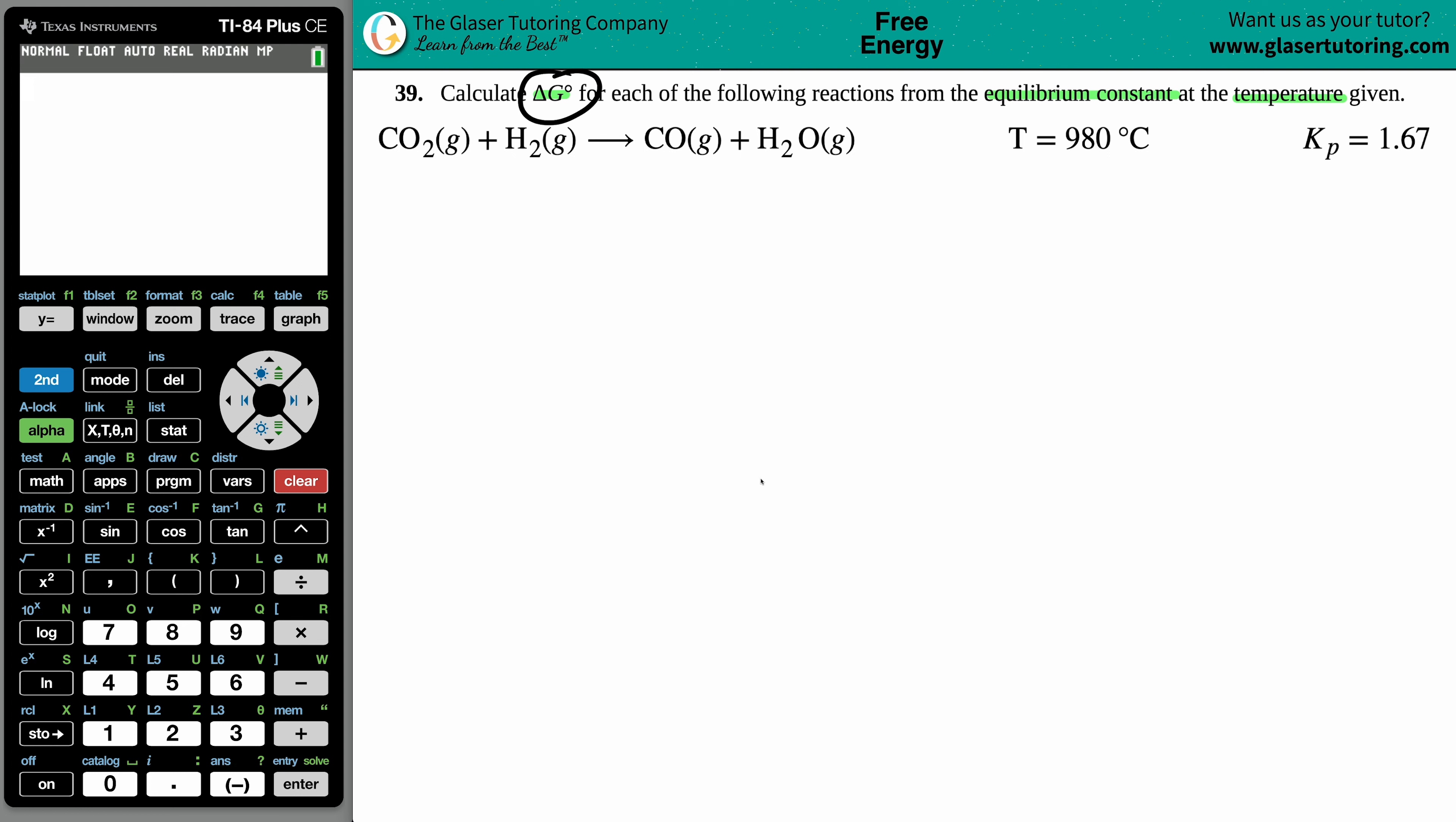Since we're trying to solve for ΔG, the easiest way is to use this formula: ΔG = -RT ln(K). Here's the ΔG and here's the equilibrium constant. Let's run through these variables.